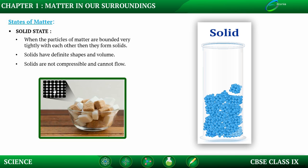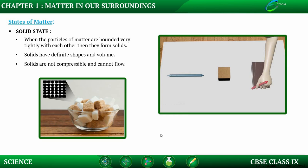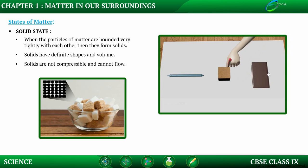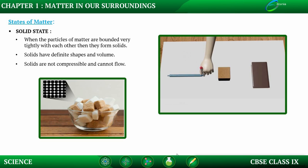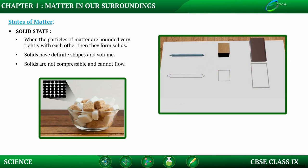Solids have definite shape. In this example, we have taken three objects — a pen, a wooden block, and a book — and we are trying to outline the shapes of these objects. The person has outlined the book, the block, and the pen. When we remove these objects from their places, we get a definite boundary and a definite shape of these objects. Therefore, it shows that solids have definite shape.